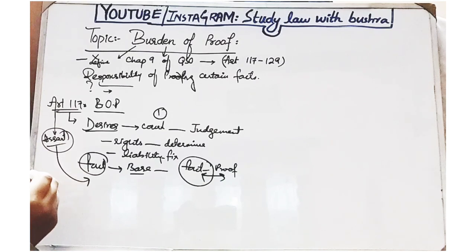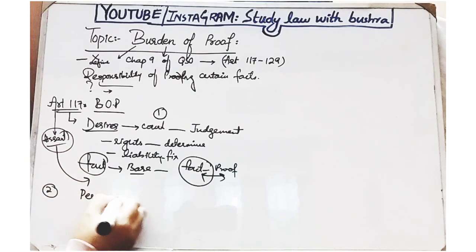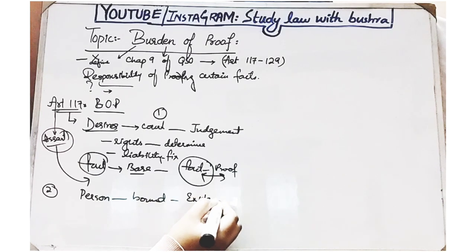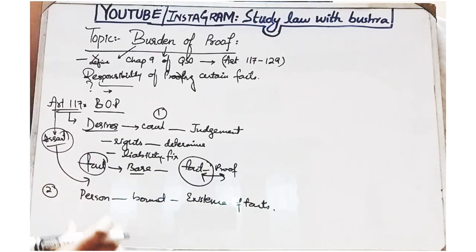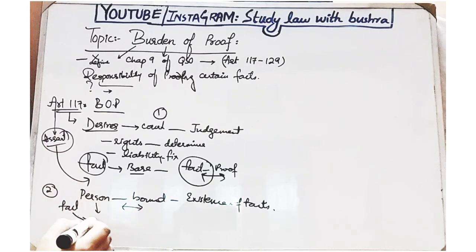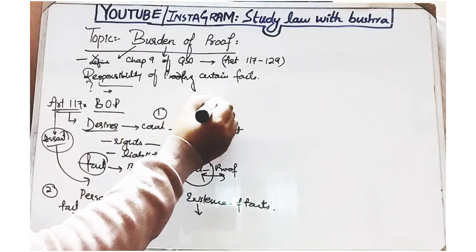Article 117 کی clause 2 کہتی ہے: 'When a person is bound to prove the existence of any fact, it is said that the burden of proof lies on that person.' یعنی جب کوئی بندہ کسی fact کی existence کو assert کر رہا ہے اور یہ کہہ رہا ہے کہ یہ fact exist کر رہا ہے، تو burden of proof اسی بندے پر آئے گا جس نے اس fact کو assert کیا ہے۔